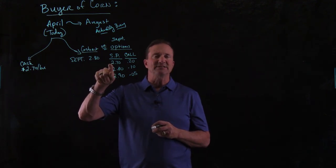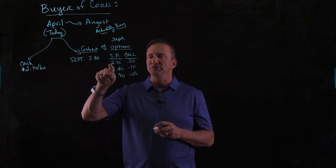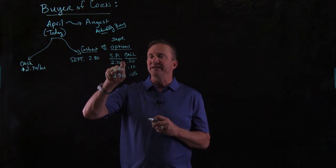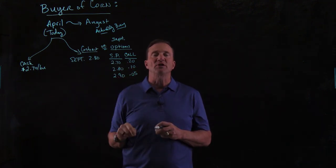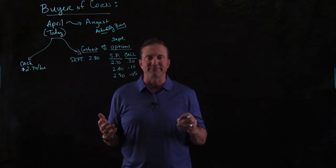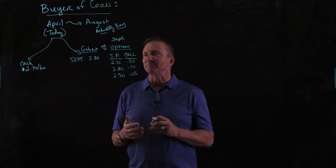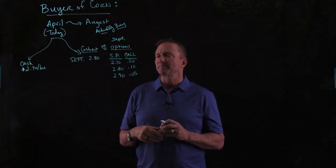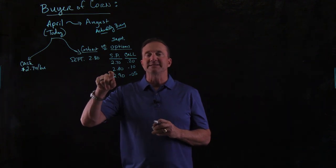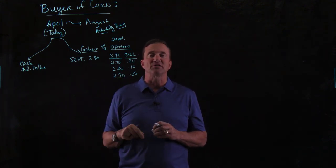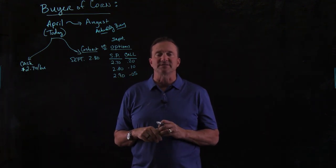We could get a call option that gives us the right to buy at $2.70 — that is a strike price. $2.70 would cost you $0.20 a bushel. To keep this in simple terms, I'm going to look at everything in bushels. $2.80 is the next strike price, and that would cost you $0.10 to buy.